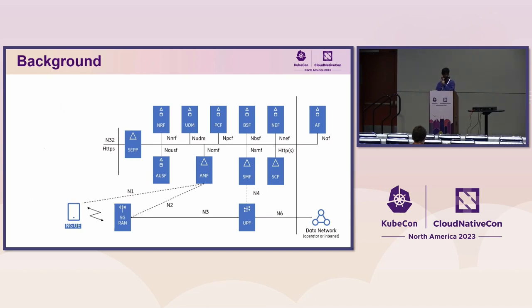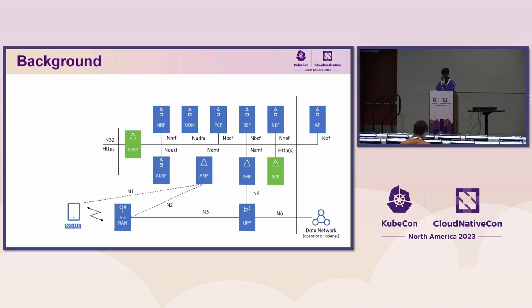Just to give a brief background of what we work on: the latest 5G core network has a lot of distributed network functions, each having its own lifecycle, independent policies and management interfaces. They all communicate via HTTP/2 on a service bus. Me and my colleagues work on two of these — the service communication proxy and a security edge protection proxy — which sit between all traffic in a 5G core network and essentially act as the window into what is the traffic within that domain.